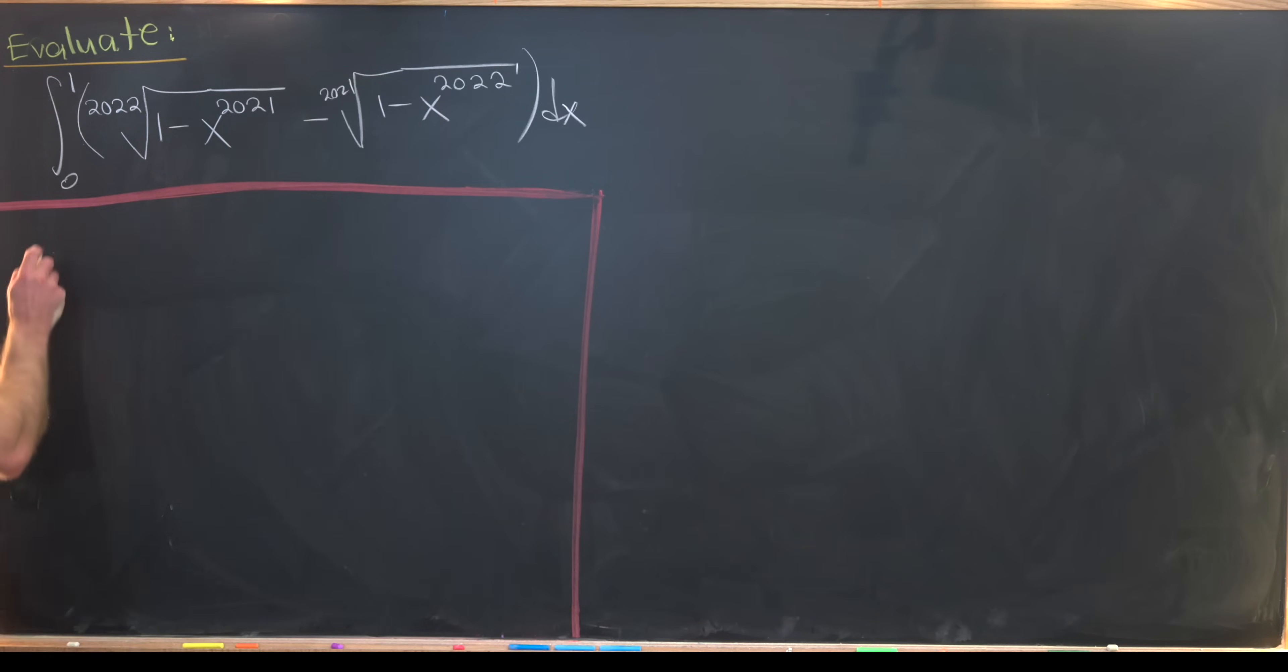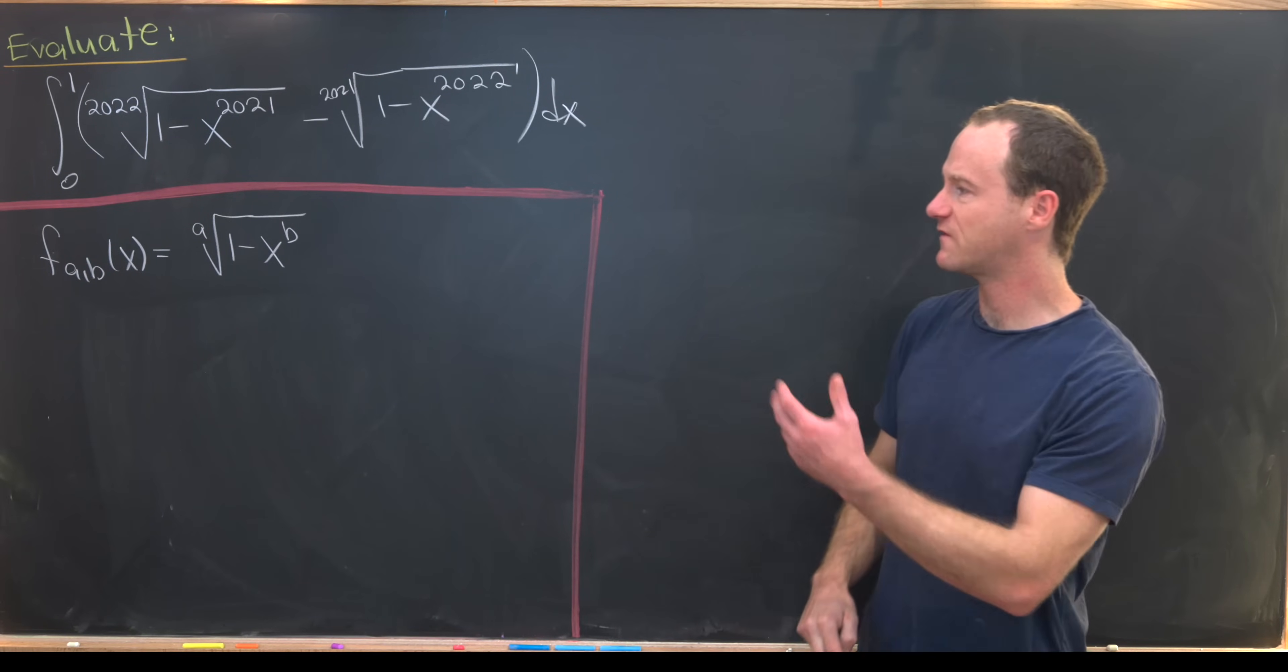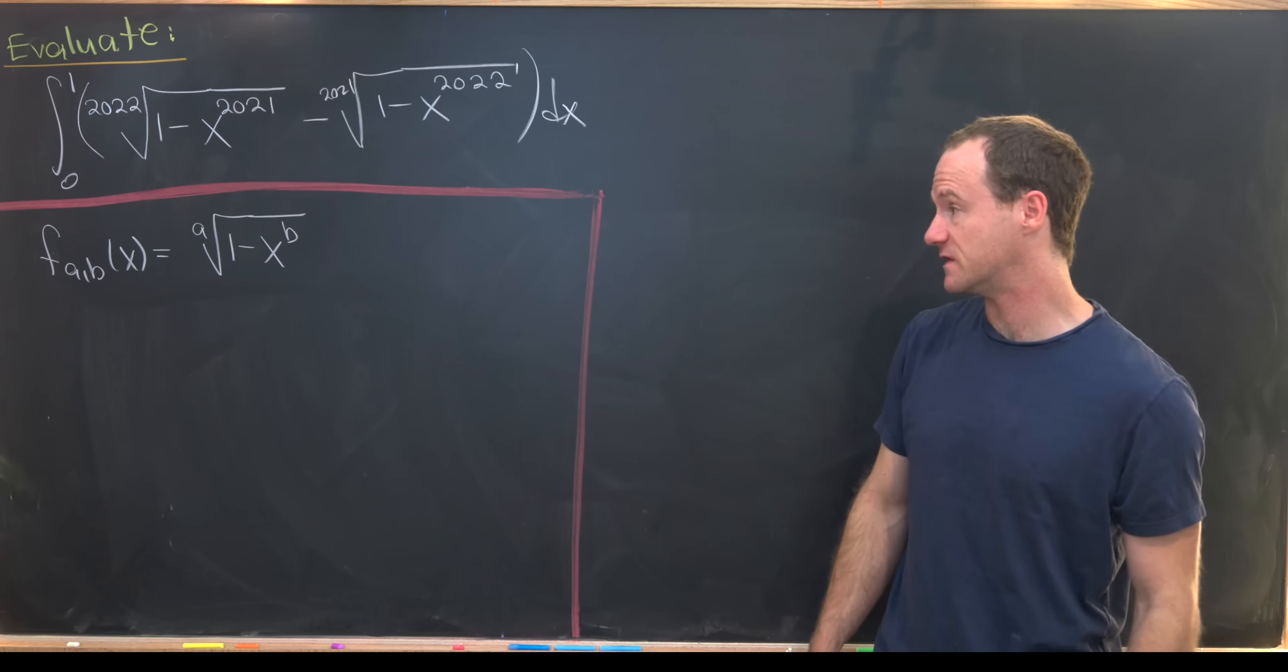Let's set f sub ab of x equal to the ath root of 1 minus x to the bth power. And then I want to find the inverse function of this.